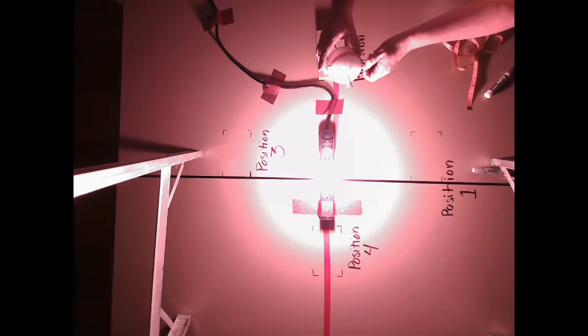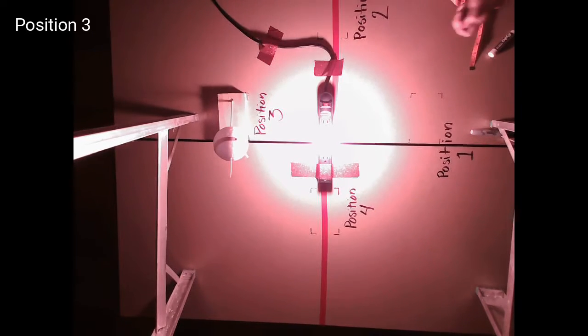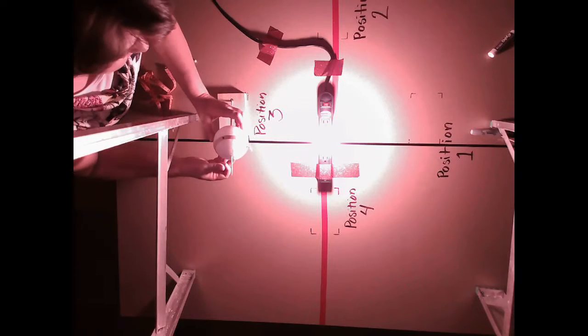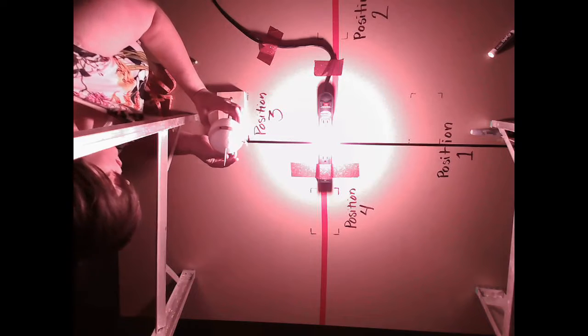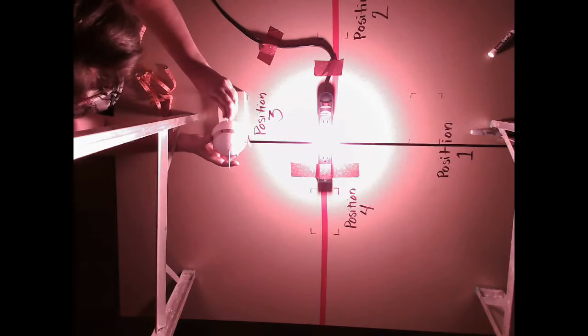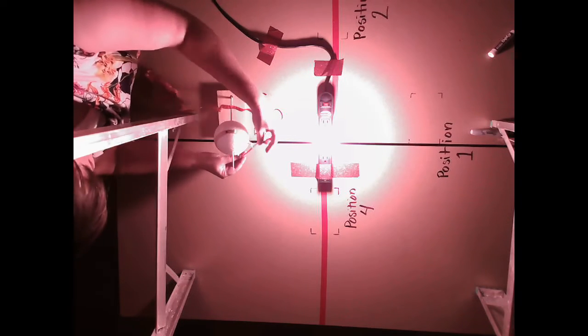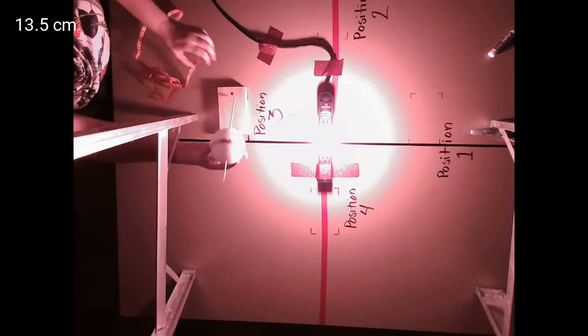So we're going to move again. We're going to take our push pins out and move to position three. We are going to point that guy towards the Sun again. He doesn't like to stay in that position because he is heavy. And again, we are going to put it where it is light to dark. We will measure that again, and we are at 13 and a half centimeters again.